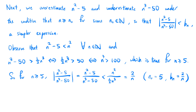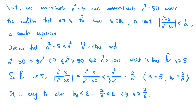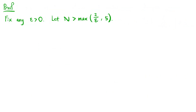In this case, n0 equals 5 and bn equals 2 over n. We know it is easy to solve bn less than epsilon, because 2 over n less than epsilon happens when n is greater than 2 over epsilon. So in addition to 5, capital N has to be greater than 2 over epsilon.